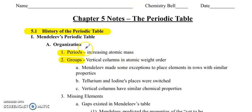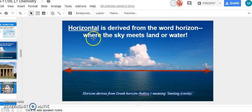I want to make sure we just make a general note. Periods are horizontal. So they go across. They're the rows. And then groups are the vertical columns. If you have trouble memorizing that, think about this.